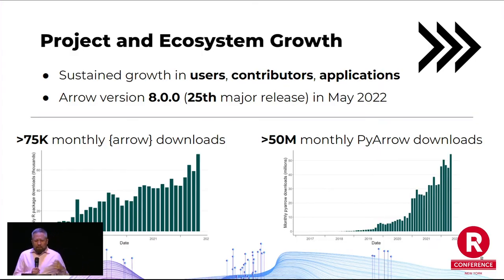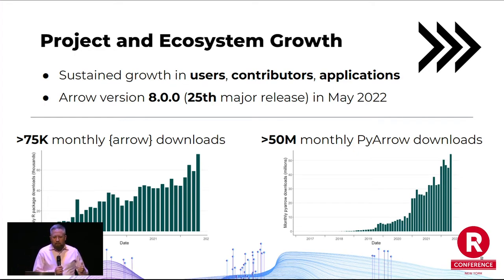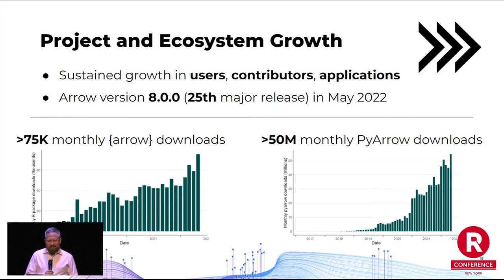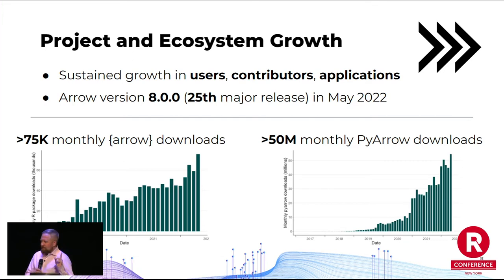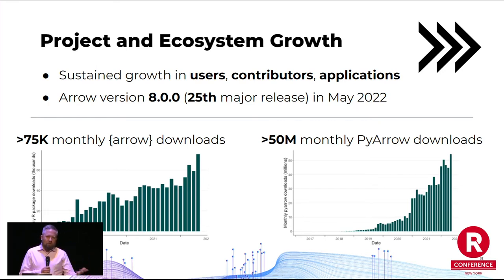The Arrow project and ecosystem has seen huge growth since it started. We see increases in users, contributors, and applications that use it. We had our eighth major release this past May. We have over 75,000 downloads per month of the Arrow R package — and that's actually only one CRAN mirror, the one that has logs from RStudio. We also have over 50 million PyArrow downloads. And importantly, the number of unique contributors to Apache Arrow is increasing, so we're developing the community around the code so that it can be maintained going forward.